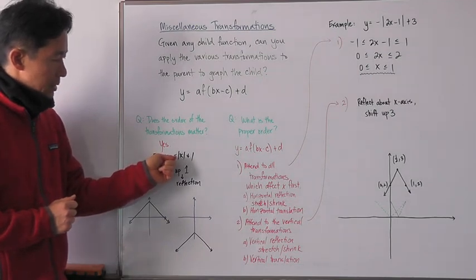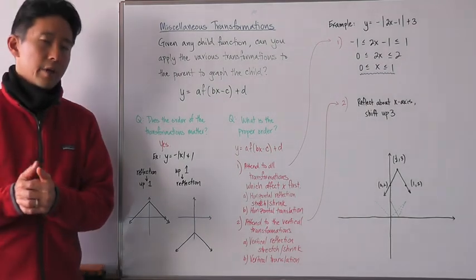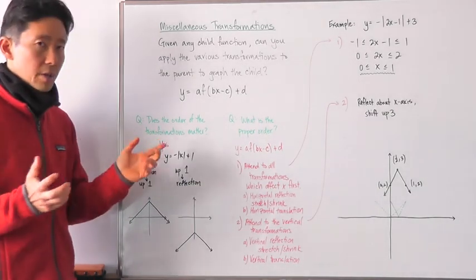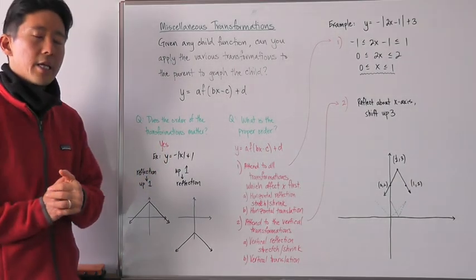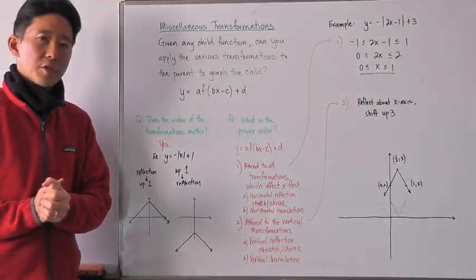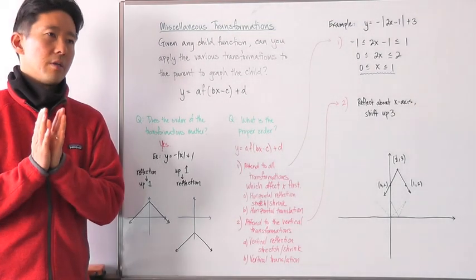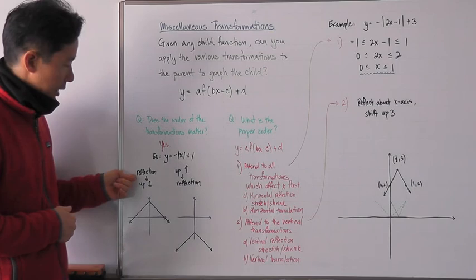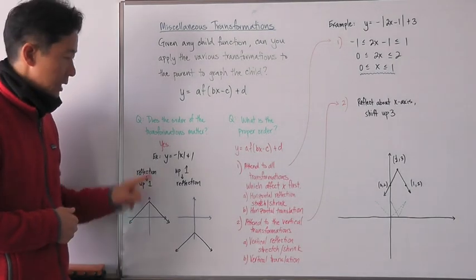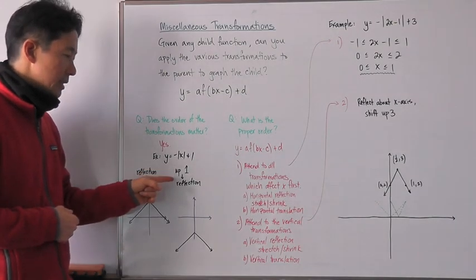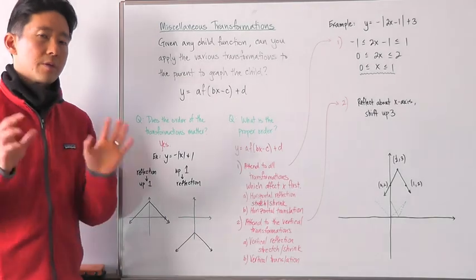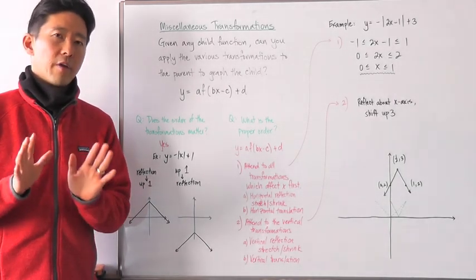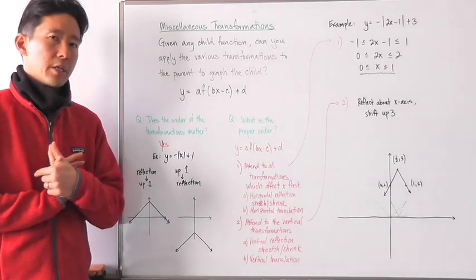For example, y is equal to the opposite of the absolute value of x plus one. We can recognize that the parent function is the absolute value function and we have two transformations: a reflection about the x-axis, and a vertical shift of one. Starting with the parent function f of x equal to the absolute value of x, if I take the reflection first and then shift up one, this is what the graph would look like. On the other hand, if I went up one and then did the reflection, the graph would look like this. So with this very simple example, if we have more than one transformation applied to a parent function, we have to be very careful about the order in which we apply the transformations.